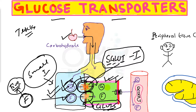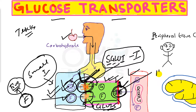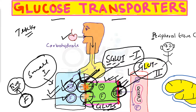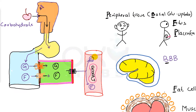The second time glucose will enter into the bloodstream through a transporter. Since first time it used one transporter and second time this one, its name must have number 2. So here it is GLUT2, and GLUT2 is responsible for the transport of both glucose and fructose.